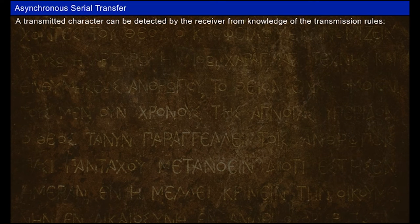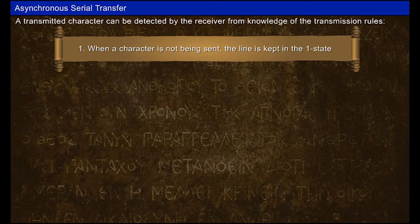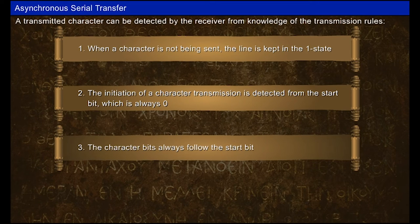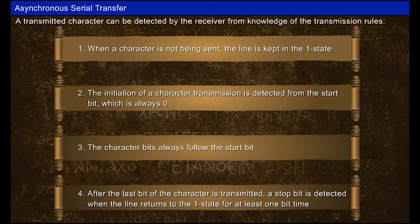A transmitted character can be detected by the receiver from knowledge of the transmission rules. When a character is not being sent, the line is kept in the one state. The start bit, which is always zero, initiates character transmission. The character bits always follow the start bit. After the last bit of the character is transmitted, the stop bit is detected when the line returns to the one state for at least one bit time.